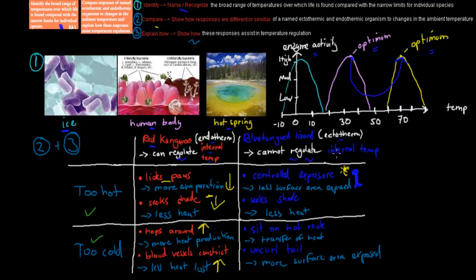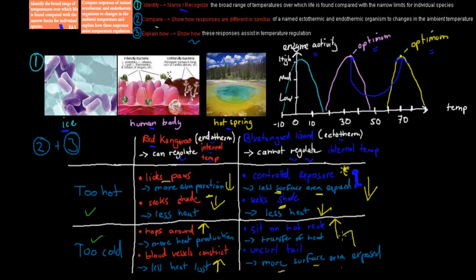Comparing that to the blue-tongued lizard: when it's too hot, it does something called controlled exposure — showing only part of its body to the sun, reducing surface area exposed, which helps control temperature. It can also seek shade. When it's too cold, it can sit on a hot rock, which allows heat to transfer from the rock to the lizard, bringing its temperature back up. It can also uncurl its tail, increasing the surface area exposed to the sun, which heats up a bigger area and raises the temperature.